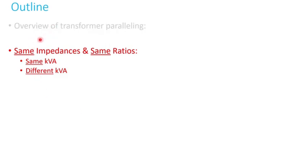So kind of recap: in this video, part one, I just gave a quick overview of transformer parallelism. In the next video I will talk about paralleling two transformers with same impedances, same turn ratios. Case one will do same KVA or MVA, and case two will do different—they have different KVAs or MVAs.